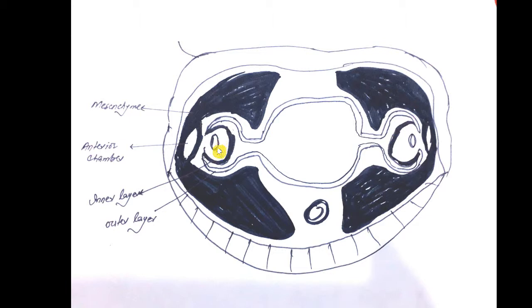The lens has two walls — an anterior wall and a posterior wall — and is made up of simple cuboidal epithelium, as it is formed from the surface ectoderm. The cells of the posterior wall elongate, lose their nuclei, and finally form the primary lens fibers. These primary lens fibers are formed from the cells of the posterior wall.